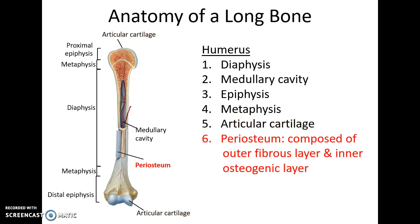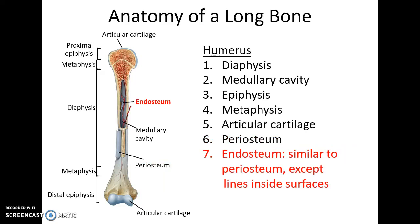Surrounding the outside of the bone is the periosteum, composed of two layers: an outer fibrous layer made of dense irregular connective tissue, and an inner osteogenic layer. On the inside, lining the medullary cavity and the borders of the trabeculae of spongy bone, is the endosteum — similar to the periosteum except it contains only the osteogenic cells.